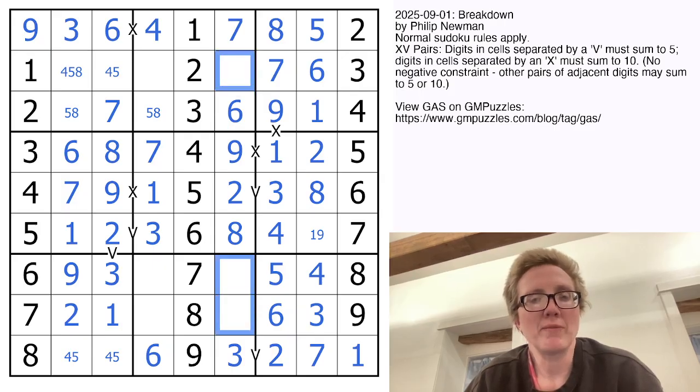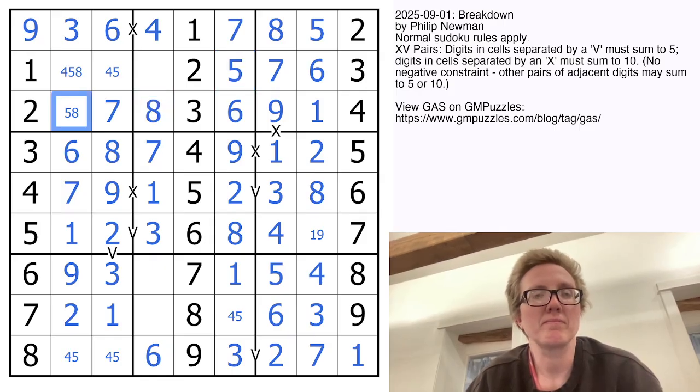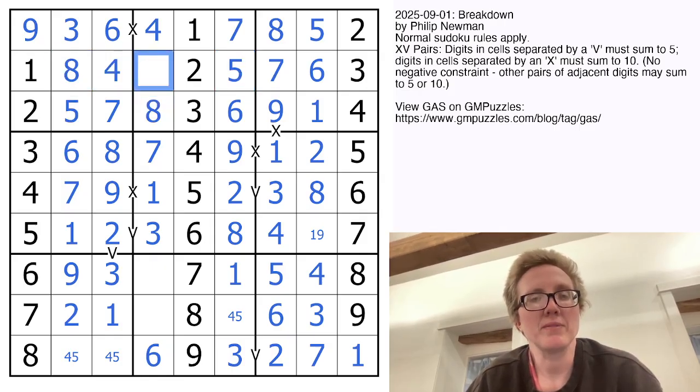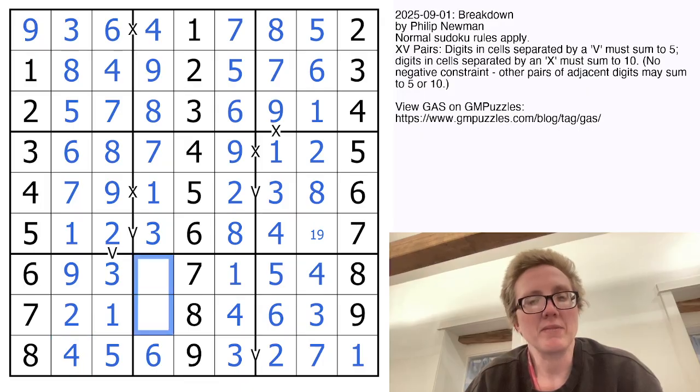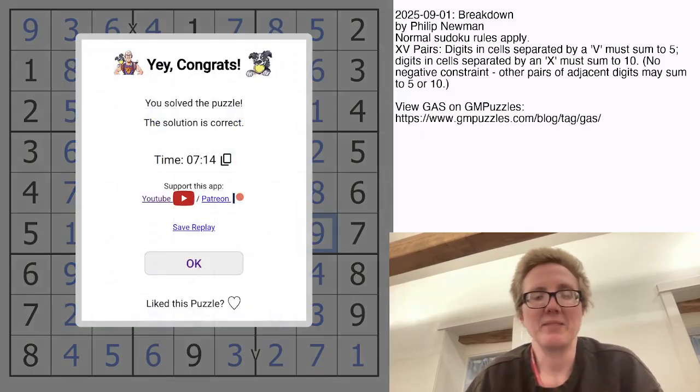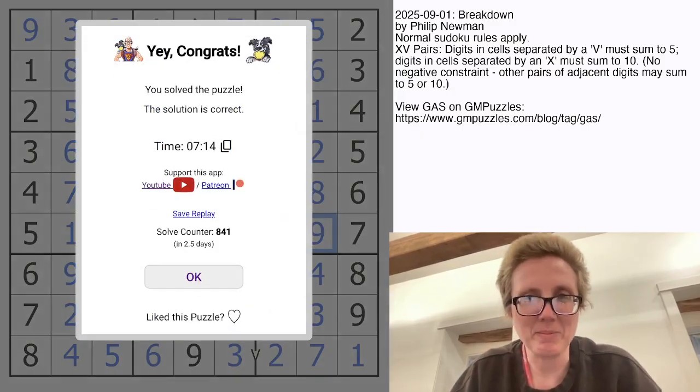In this column, I need a 1, a 4, and a 5. So this is going to have to be a 1 that's a naked 1. That's going to be a 5 because there's a 4 in the region. And these resolve. And my last two cells to fill are going to be a 2 and a 5. Oh, and this one right there with a 9. And that is how you solve Philip Newman's breakdown.